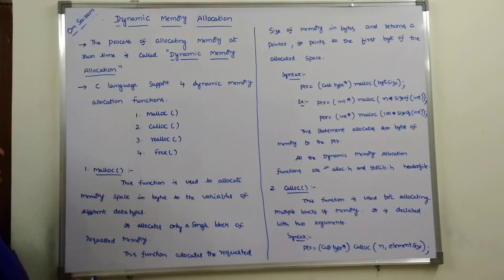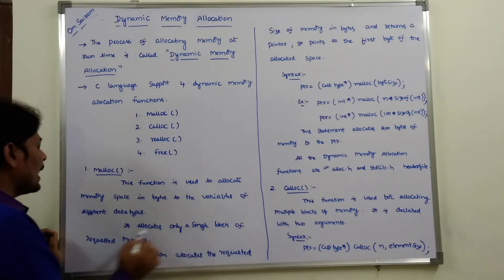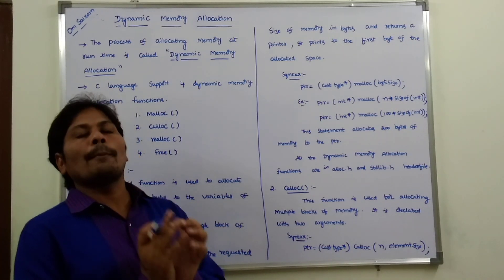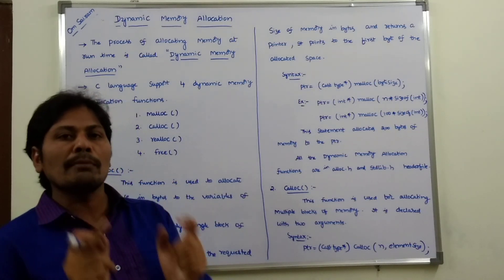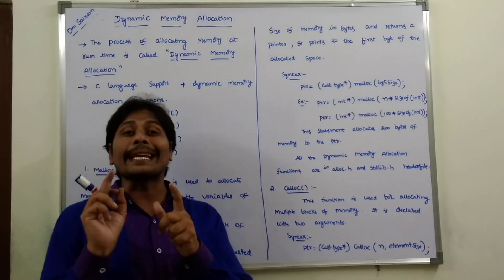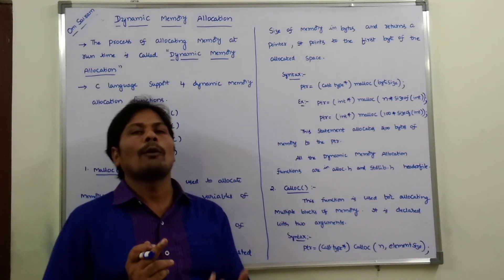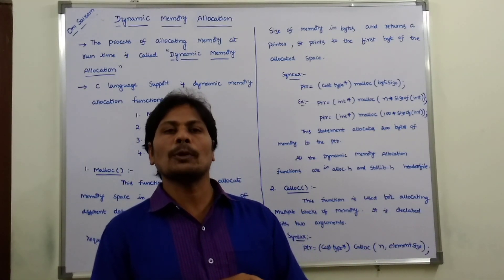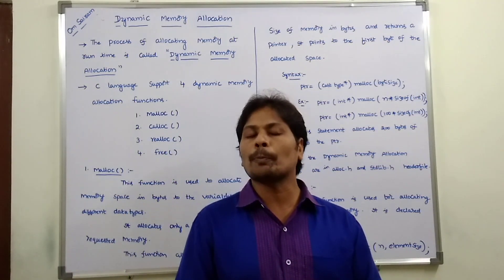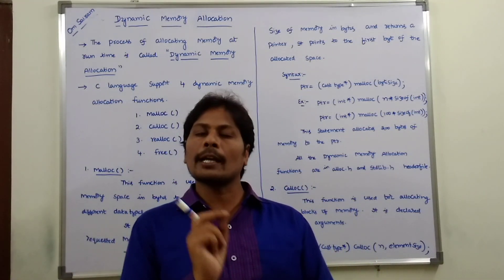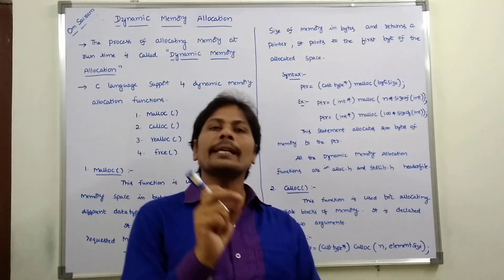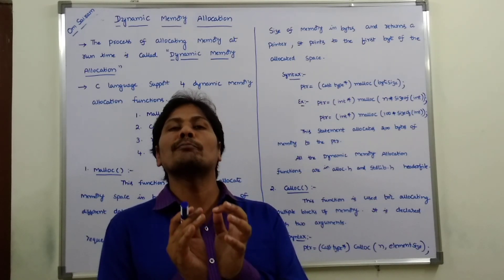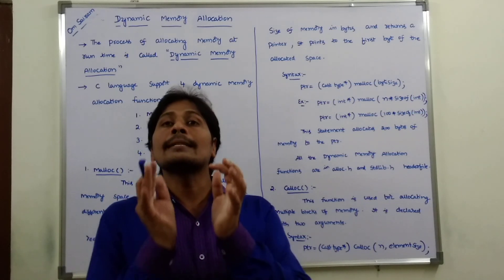The malloc function allocates only a single block of the requested memory. For example, if we want to store 200 integers, each integer occupies two bytes, so 200 × 2 = 400 bytes. These 400 bytes of memory are allocated as a single block.